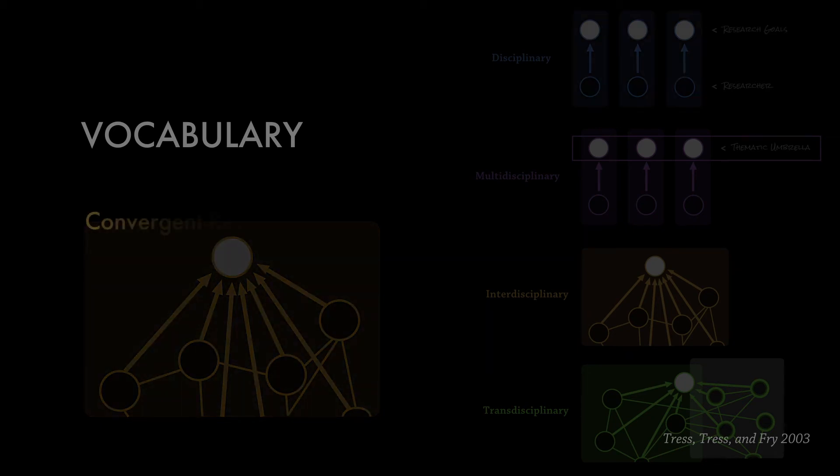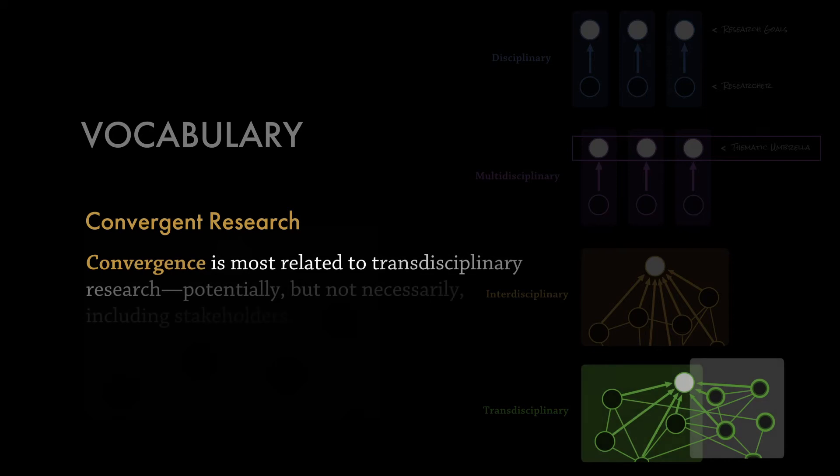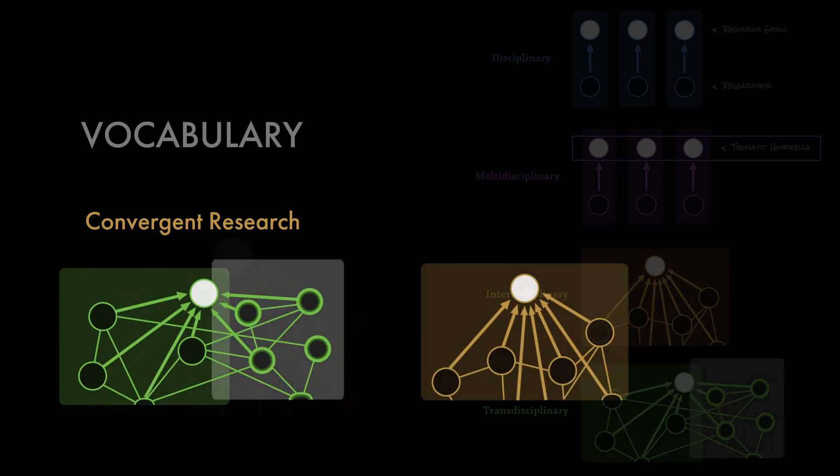Now there's this new term that I want to explain to you because you're likely hearing it a lot. Convergence is most related to transdisciplinary, potentially but not necessarily including stakeholders. They either want disciplines working together within academia who have worked together long enough that they're converging on new conceptual frameworks, new paradigms, new disciplines that could tackle problems that have not been tackled very effectively in the past by one discipline. Or they also include working with stakeholders in the community and non-academic areas to try to converge on solutions that will have high societal impact. So those are the two ways they're using that term.